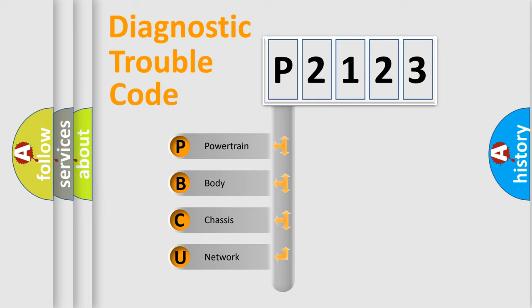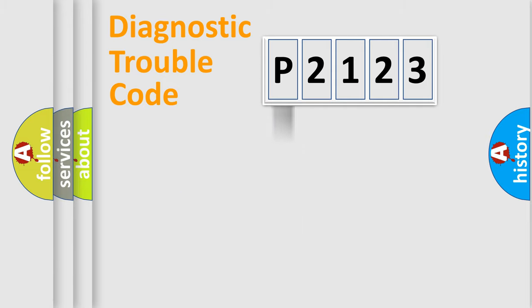We divide the electric system of automobile into four basic units: Powertrain, Body, Chassis, and Network. This distribution is defined in the first character code.